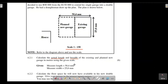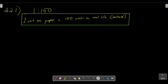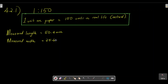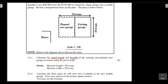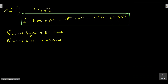We are given the measured length of 50.4 millimeters and the measured width of 25.6 millimeters. Since we want the actual garage dimensions in meters, it's better to start by converting these millimeter values into meters first. That way, when we use the scale equation, our units are already in meters, which makes things simpler.